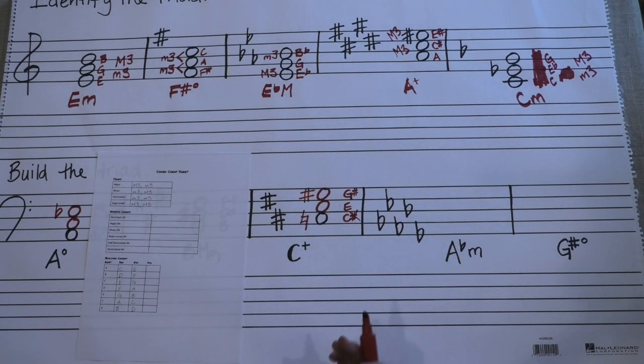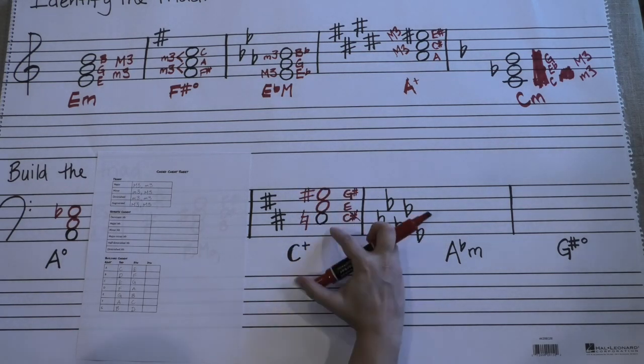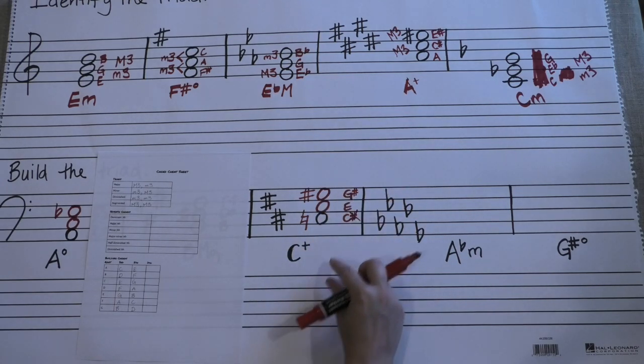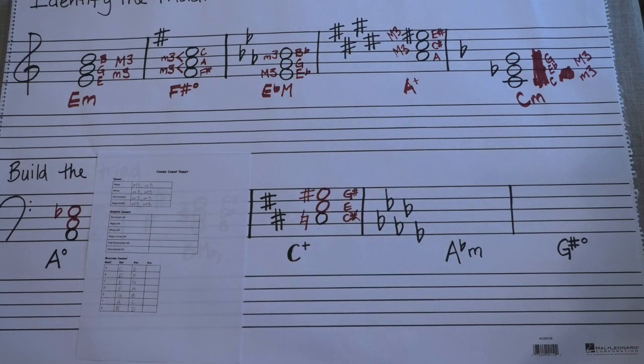And you can always go back and double check once you've added accidentals that you think you need. You can always go back and check C to E, E to G sharp. Make sure that it's two major thirds stacked on top of each other and you're good to go. Let's do two more.